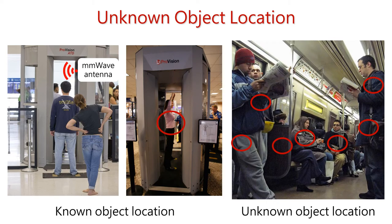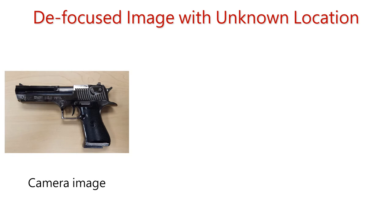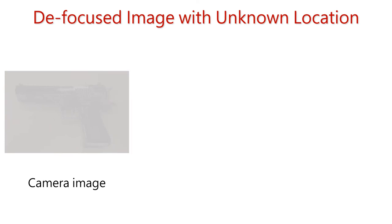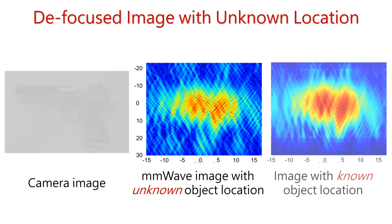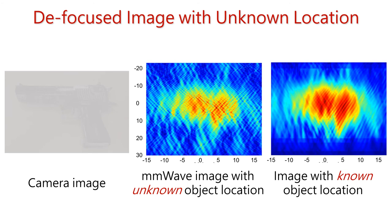But why is it a challenge? To understand that, we use this model gun, hide it using a cloth, and then image it using our system. As you can see, when our system knows the location of the object precisely, the image is crisper and more focused on the object itself. On the other hand, when we don't know the object's location, the image is blurry, defocused, and also the shape cannot be determined accurately.